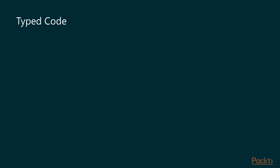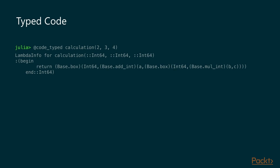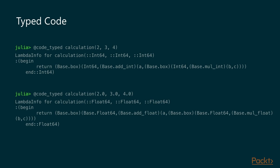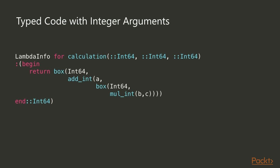For the typed code we use `@code_typed` and specify what kind of arguments we're using. What you'll notice is that there are no longer generic add functions — we now have type-specific adds. We're adding integers and sticking the values using the box function into a box labeled as a 64-bit integer. The same applies to multiplication — it becomes an integer-specific multiplication.